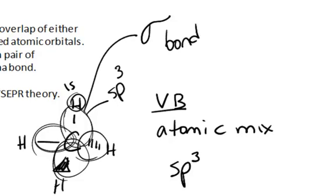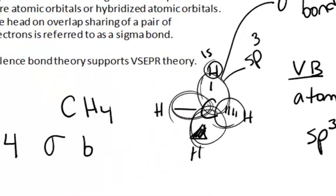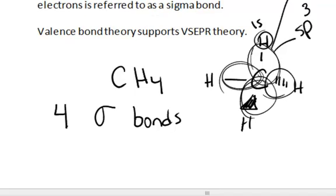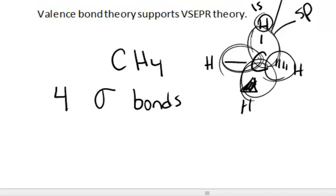So we see that in the methane we would predict four sigma bonds based on the head-on overlap between the four hybridized orbitals and the four individual atomic orbitals. Let's take a look at another example.